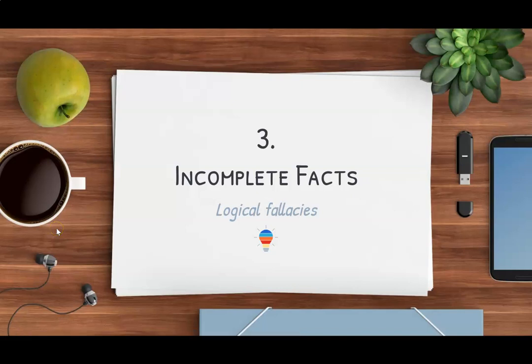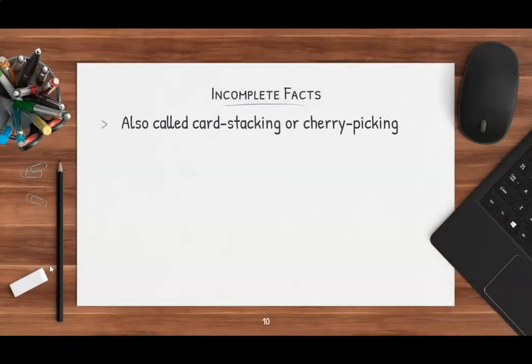The third logical fallacy that we're going to talk about in this series is that of using incomplete facts. This is another very common one. It can also be referred to as card stacking or cherry picking. We see that in a lot of lists of logical fallacies and a lot of examples. If you see somebody refer to a logical fallacy under either of these names or as incomplete facts, we're all talking about the same thing.